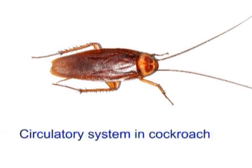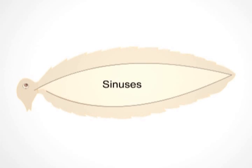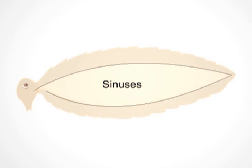The circulatory system in cockroach is open type, without blood vessels. Blood flows in spaces called sinuses in the body cavity.